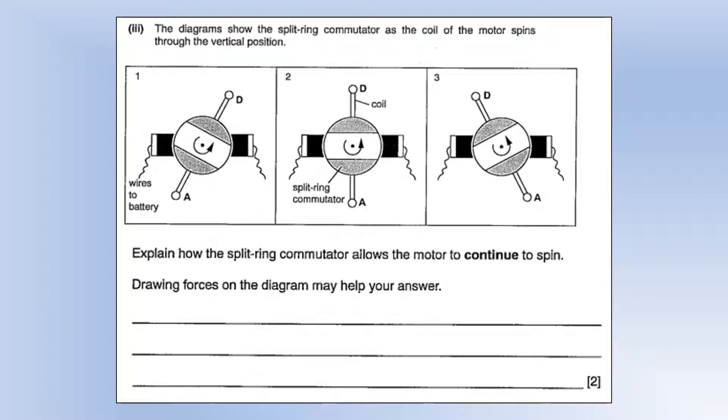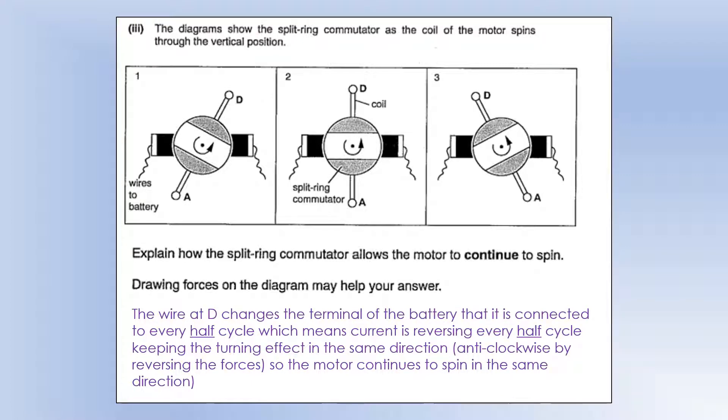Explain how a split ring commutator allows the motor to continue to spin. Drawing forces on the diagram may help you with your answer. So the wire at D changes the terminal of the battery is connected to every half cycle. So for half a cycle, it's connected to the positive terminal. Half the cycle, it's connected to the negative terminal, depending on which wire it's connected to. And that means the current is going to be going the opposite way around the coil every half cycle as well. And you can see it actually changes the connection when the coil is vertically aligned. So like D's at the top or A's at the bottom or A's at the top and D's at the bottom. That's when it actually switches over.